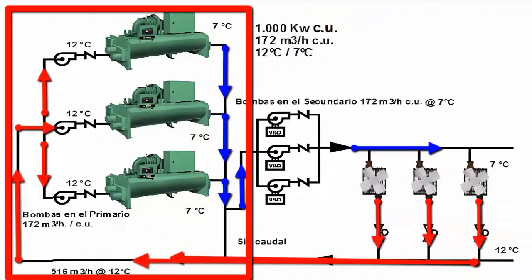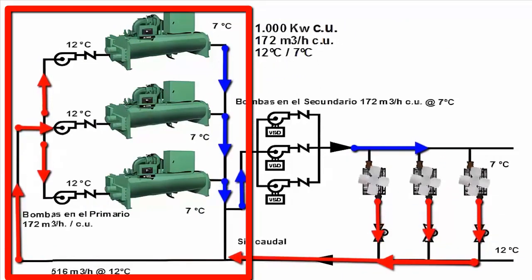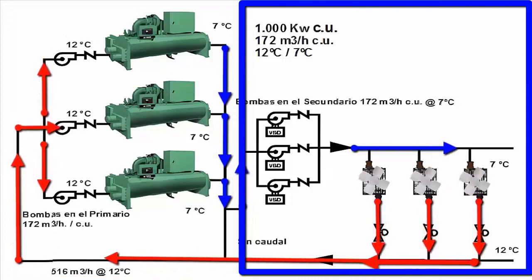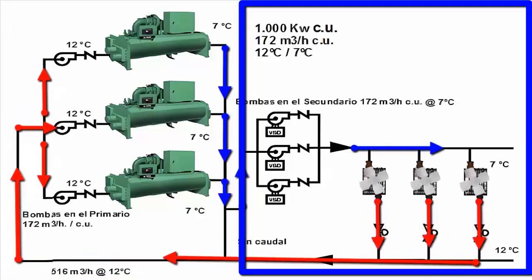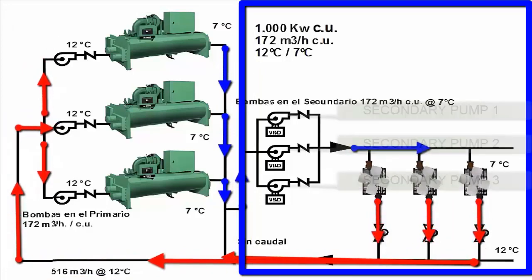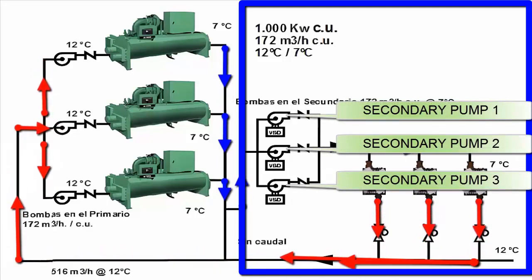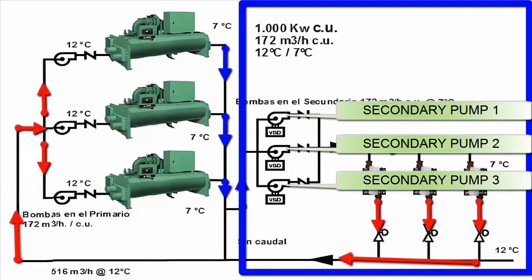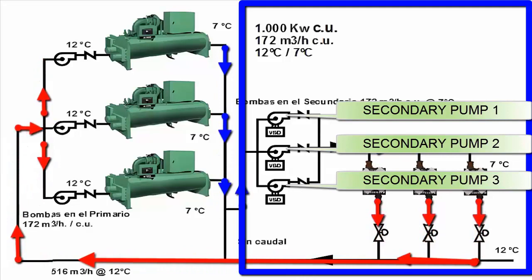This part is called the primary circuit. This is the secondary part, which handles water distribution to the application. We have a pumping station with a variable flow rate.